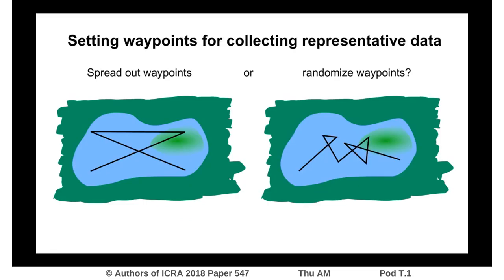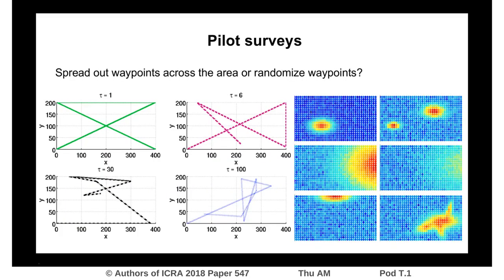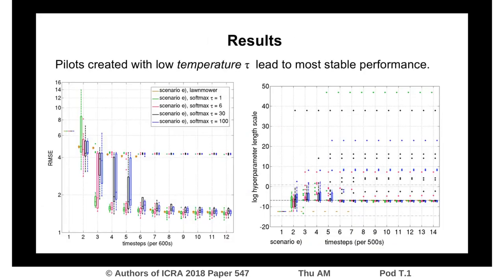For adaptive sampling, we want to try to get representative data and we wonder how we should set waypoints. For example, we can spread them out over the area for coverage, or we can randomize them. We developed a method which uses a softmax equation on the distance between potential waypoints and sampled paths to balance between coverage and randomization. We tested our algorithm for different values of the temperature in the softmax equation over simulated scenarios, and show that pilots with a low temperature, which optimize more for coverage, lead to the most stable performance.